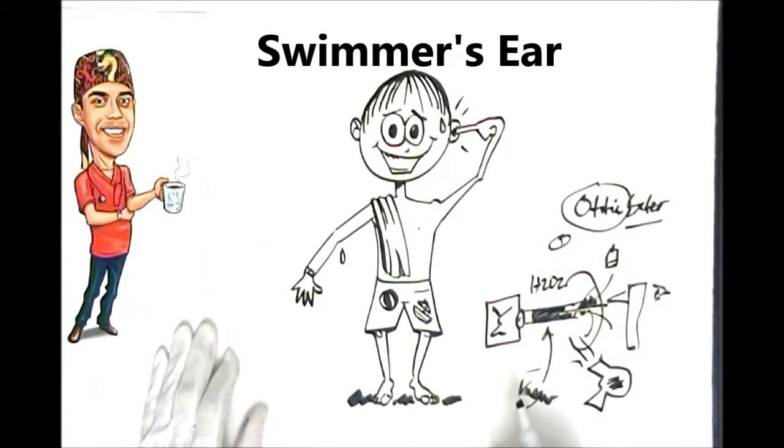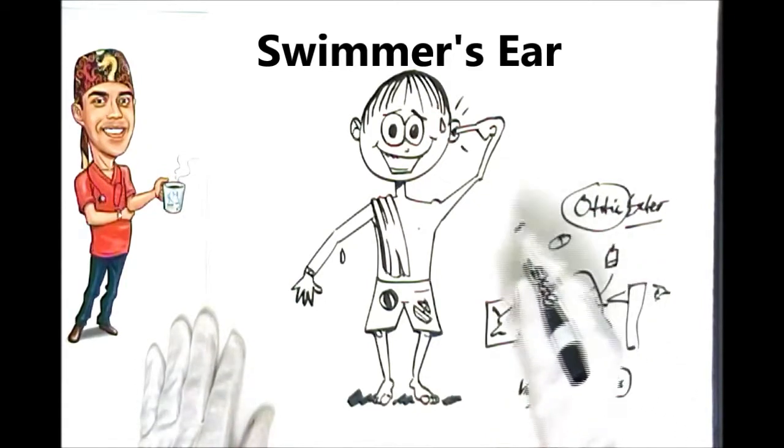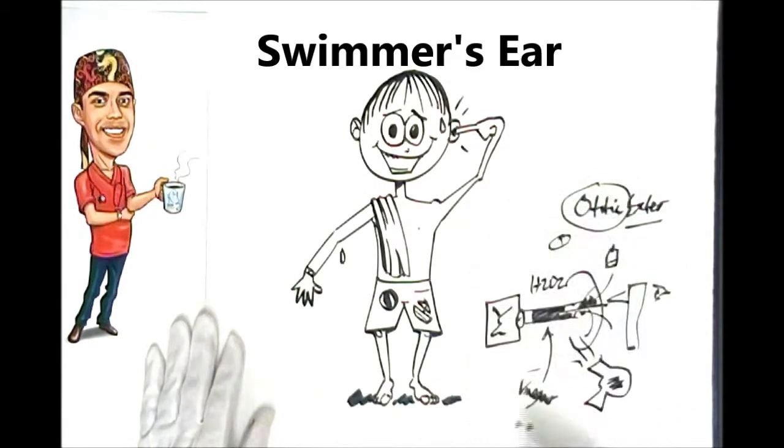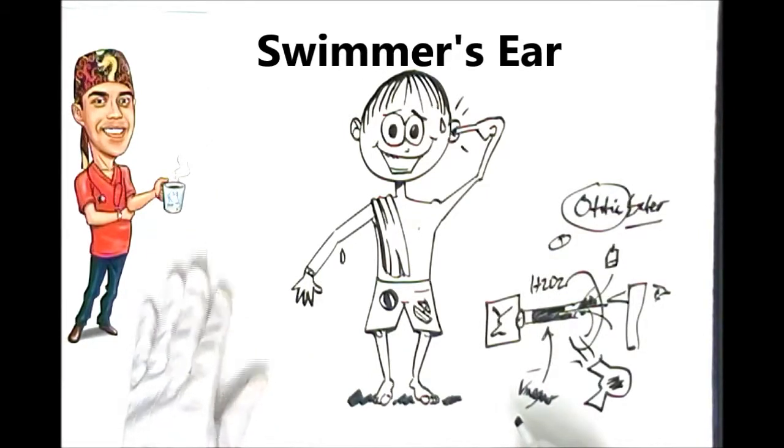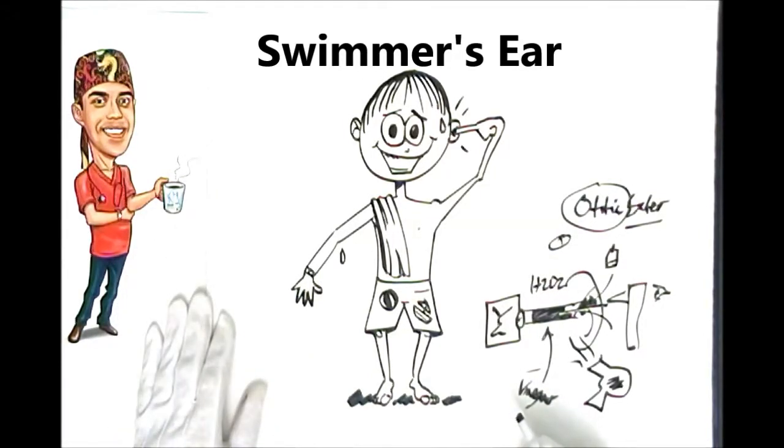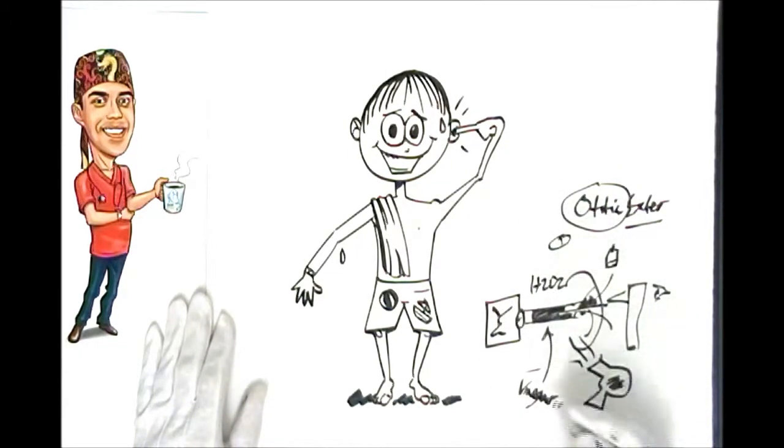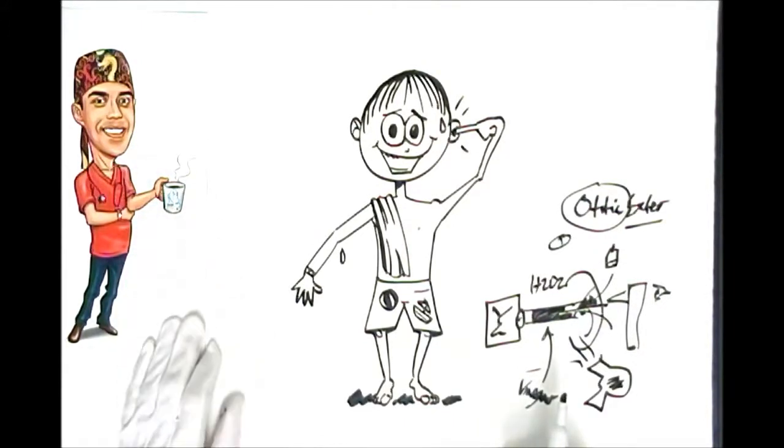So that ladies and gentlemen is a swimmer's ear demystified and the stuff you should know about it. The most important take home message is that once you've gotten a swimmer's ear, you should go and see your family doctor to get antibiotics. But you may be able to prevent that whole scenario from occurring in the first place by taking those preventative measures that we just discussed. So thanks for watching and stay well.